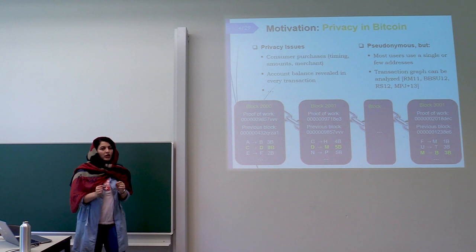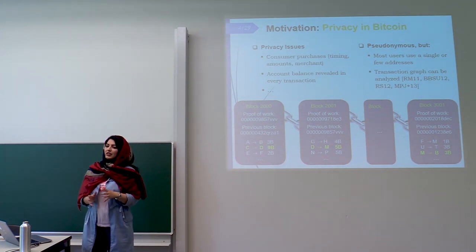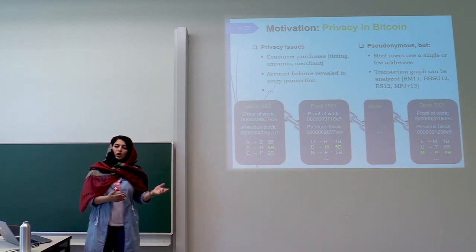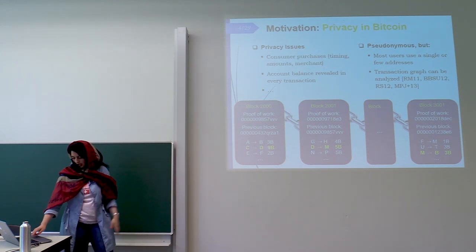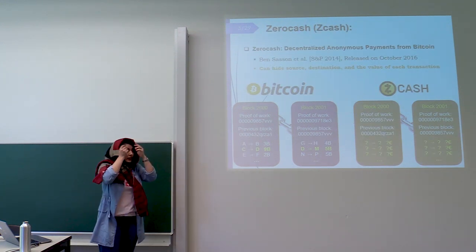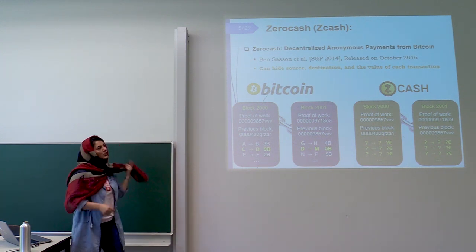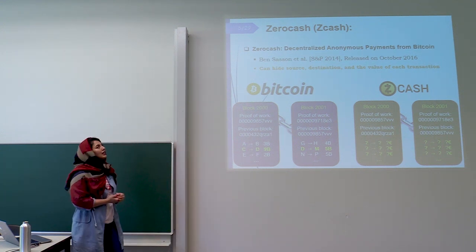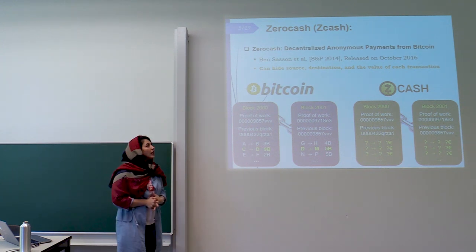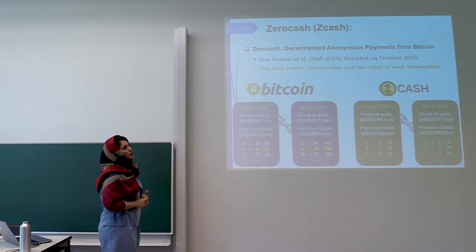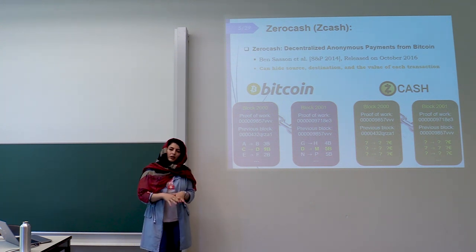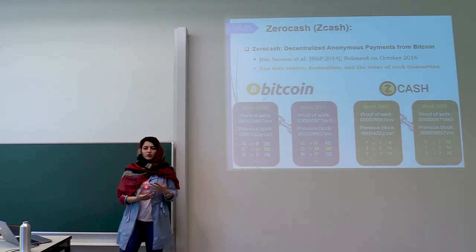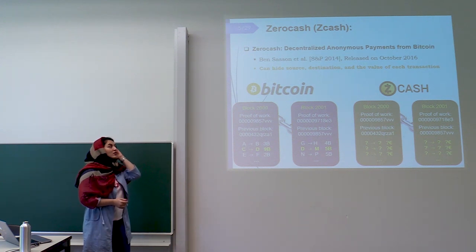It means that although addresses are pseudonymous, since users are using just one or very few addresses, transactions are linkable. One well-known proposal to solve this issue is anonymous payments — privacy-preserving digital coins. Zcash is one of the famous ones. Zcash is a decentralized anonymous payment scheme established on top of Bitcoin, proposed by Ben-Sasson et al. in 2014 and released in 2016.